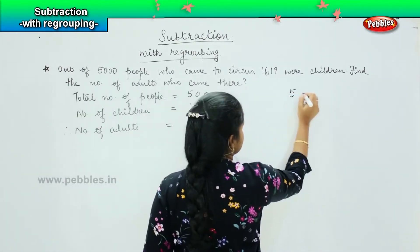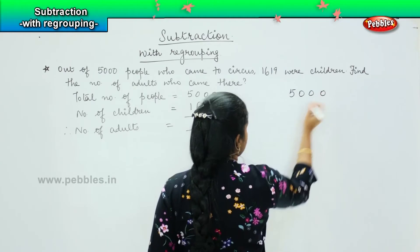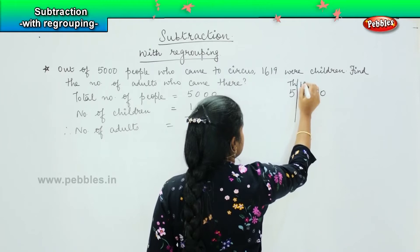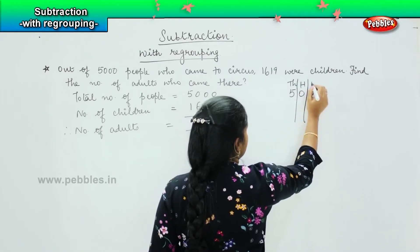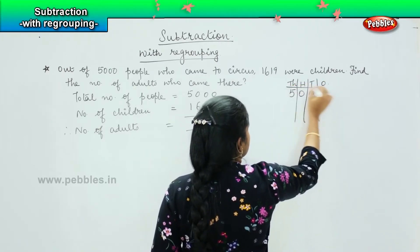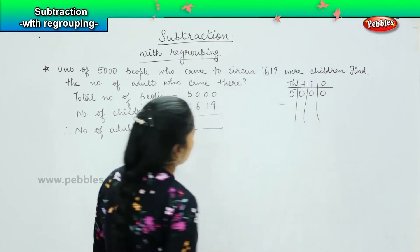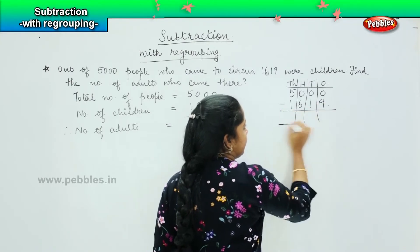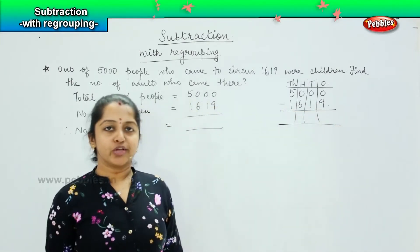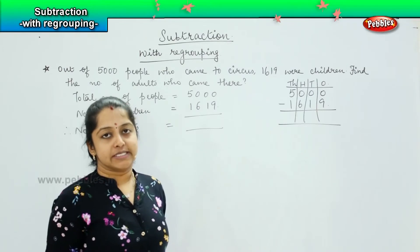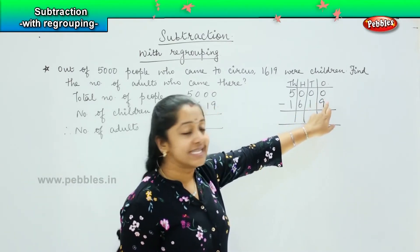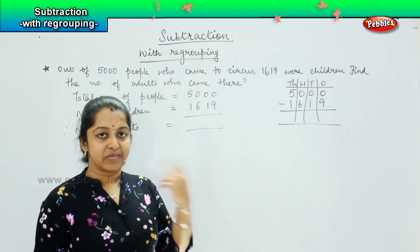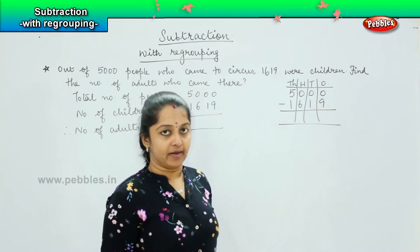Let us try to solve here. The very first step is we will be dividing it in the place value — 5000 minus 1619. Now, what we are going to do is the borrowing system. I know that 0 is less than 9, and the minuend should always be larger than the subtrahend.